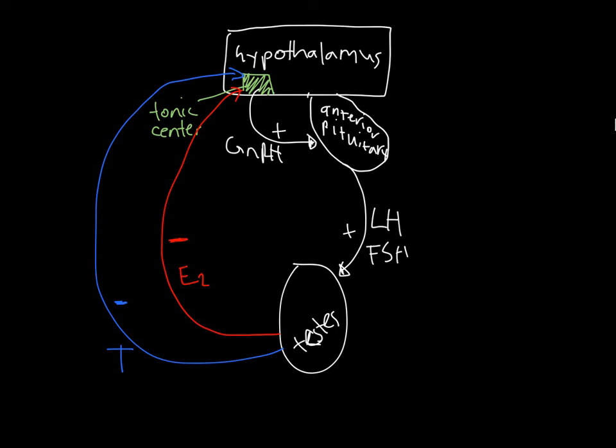However, as puberty approaches, there is a decreasing sensitivity of the hypothalamus to negative feedback. If the hypothalamus of the male, particularly the tonic center, is less sensitive to negative feedback, that means it takes more estradiol and testosterone to inhibit GnRH production. So, GnRH will continue to be secreted, and estradiol and testosterone will continue to build up. Eventually, this sensitivity will decrease to the point that enough GnRH can be produced, to produce enough LH and FSH, to produce enough estradiol and testosterone for normal testicular function and sperm production. This male animal has now been through puberty and is reproductively competent.